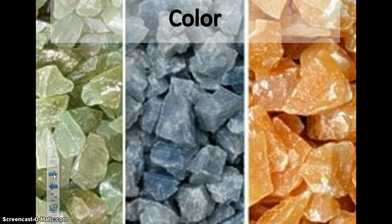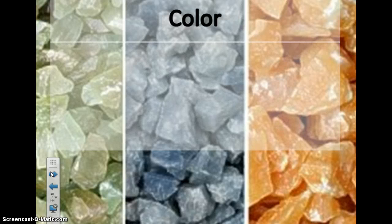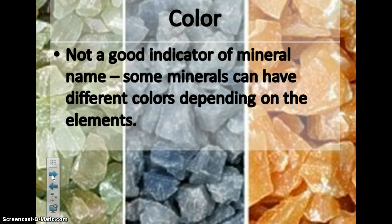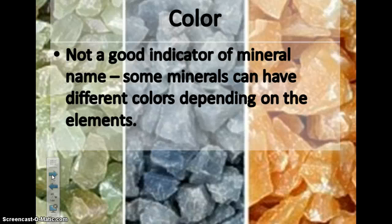Let's talk color. Color is the least important of the characteristics of minerals because it's not a good indicator of what a mineral is. Some minerals can be different colors. Quartz, for example: there's purple quartz — we call that amethyst; clear quartz — we just call that quartz; pink quartz — we call that rose quartz; and dark gray or black quartz — we call that smoky quartz. Color is not a good indicator.